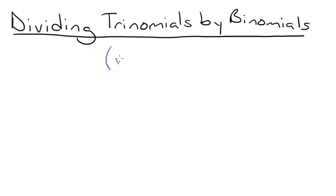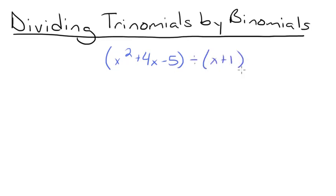x squared plus 4x minus 5 — this is our trinomial — divided by x plus 1. This is our binomial because it has 2 terms, and the trinomial has 1, 2, 3 terms.